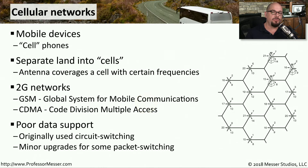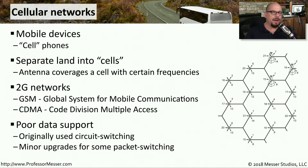These 2G networks were built with voice communication in mind — they were built so that you could make phone calls. The idea of sending data over this network was not part of the original engineering. There were minor changes made with 2G that could support some data exchange, but the primary focus was on voice communication.